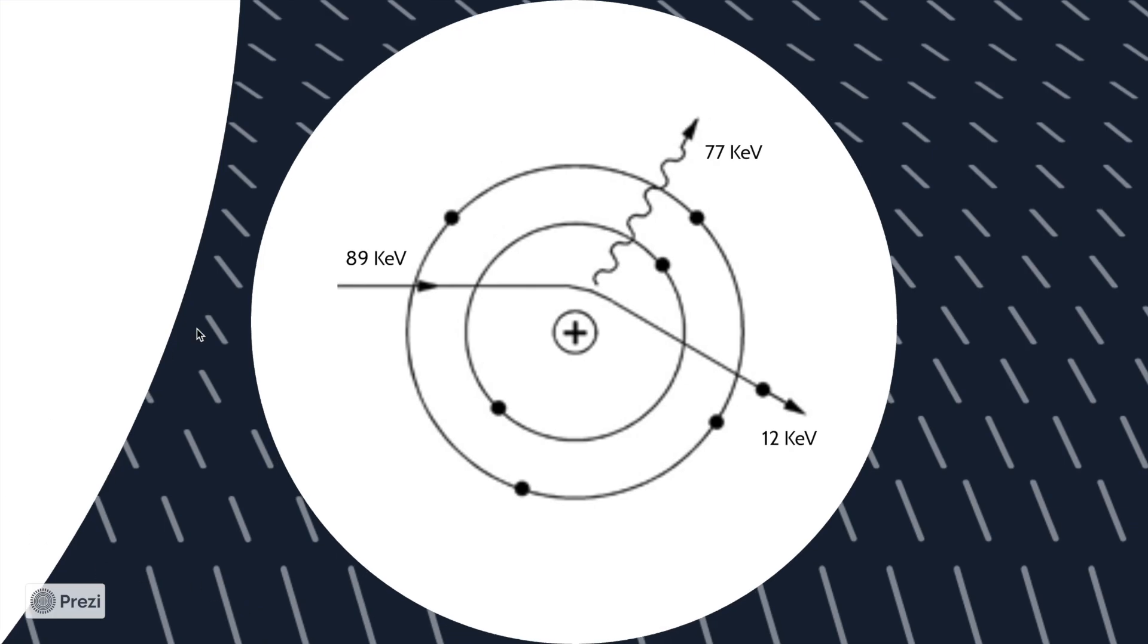For example, if 89 keV enters the nucleus and breaks down and 12 keV exits, to find the energy, you subtract 89 by 12 keV, which gives you 77 keV of x-ray photons.